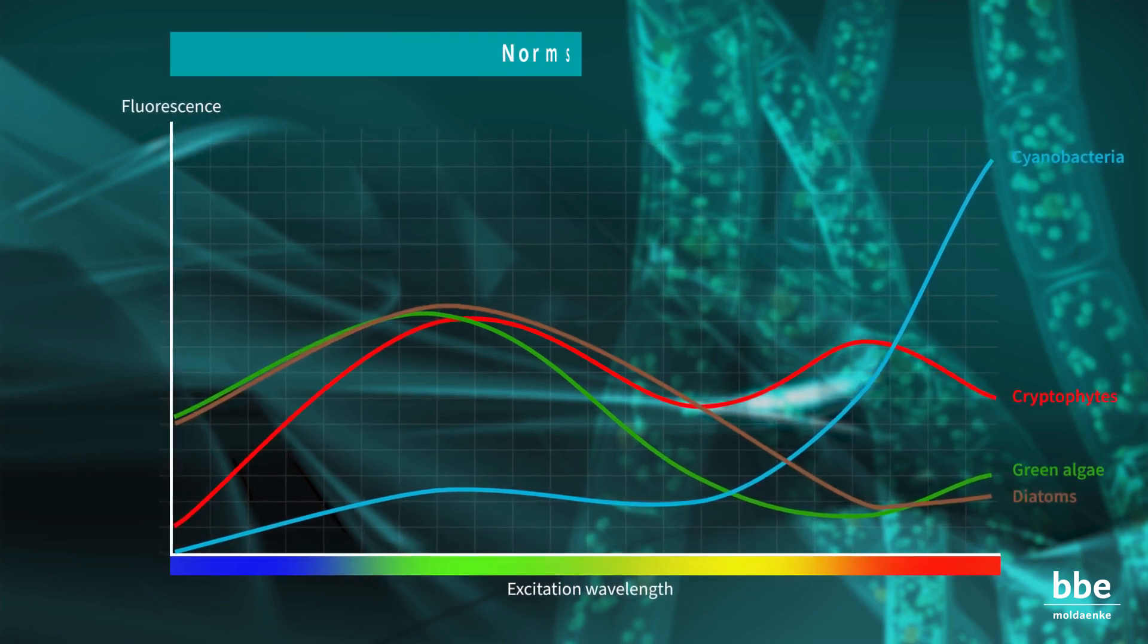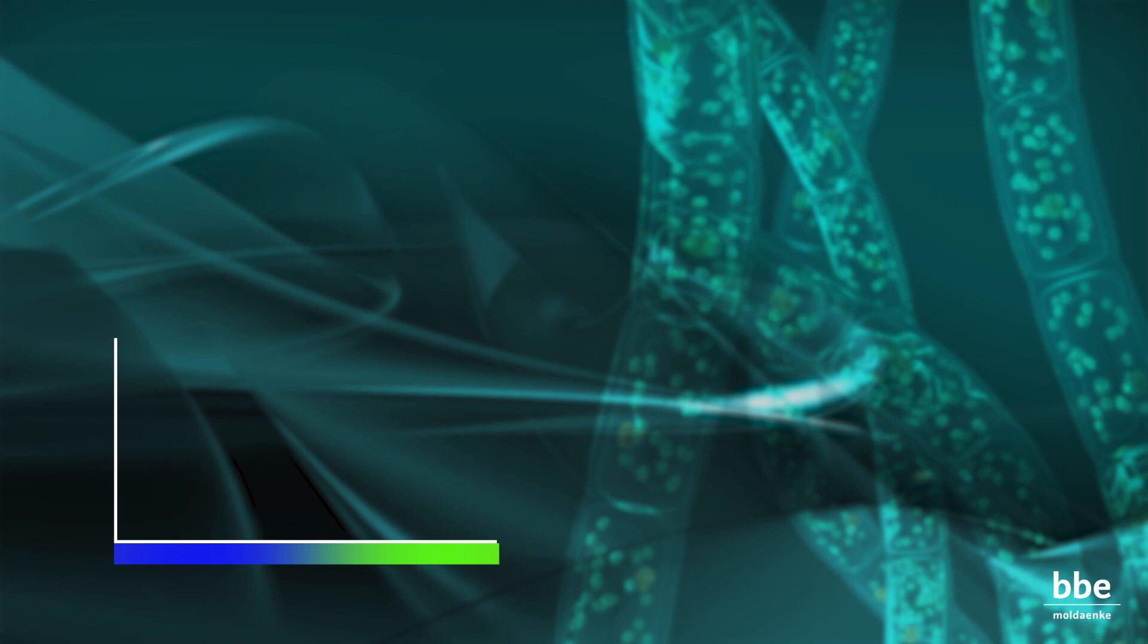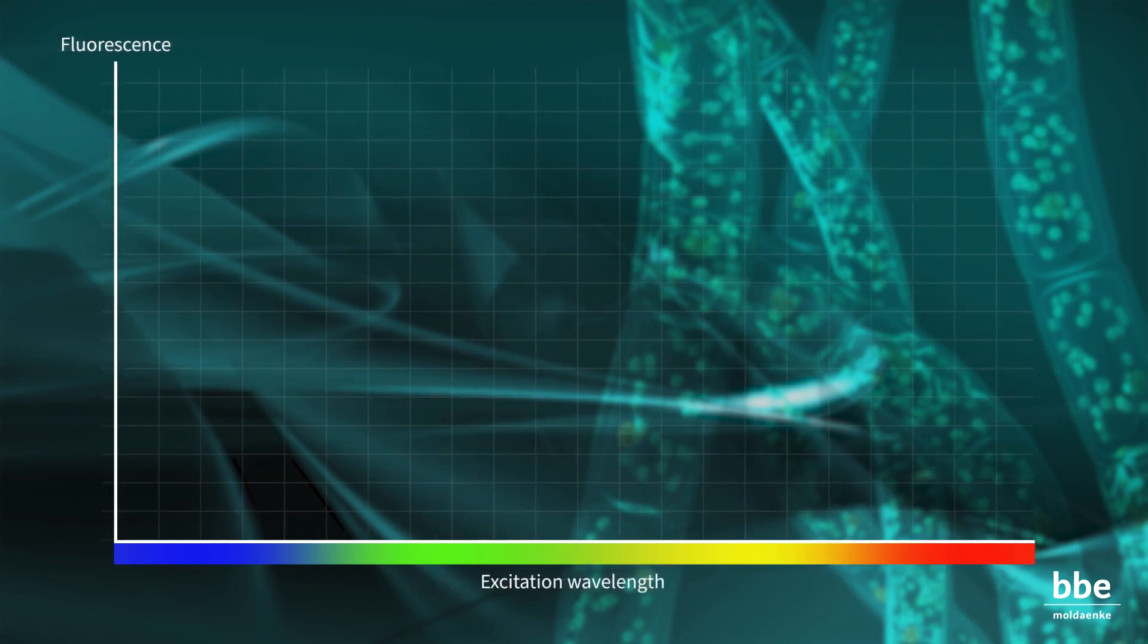This is termed the norm spectrum and enables the fluorometer to identify different algae in a sample. Assuming a given concentration of one algae class in the sample, the measured spectrum may look like this.